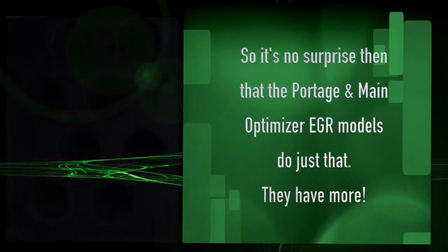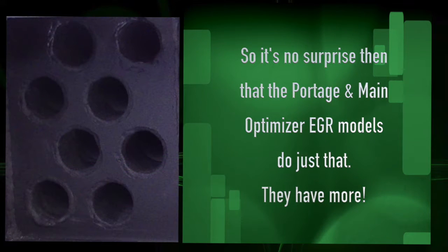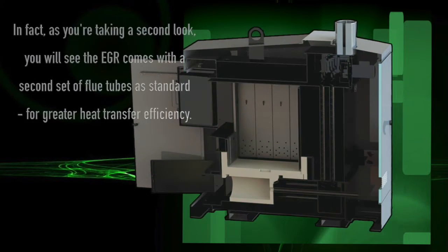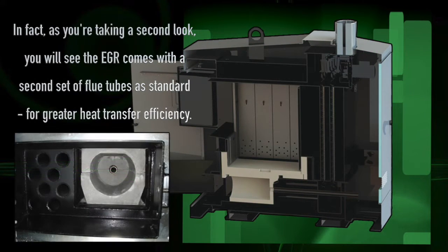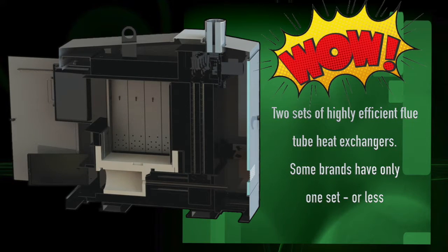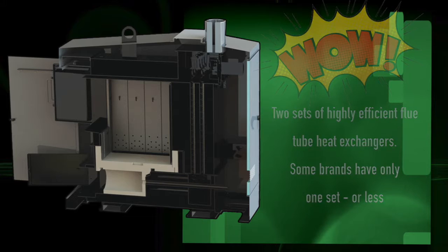No surprise then, the Portage & Main Optimizer EGR models do have more. In fact, as you're taking a second look, you will see that the EGR comes with a second set of flue tubes as standard, for great heat transfer efficiency. Two sets of high efficiency flue tube heat exchangers? Some brands only have one set or less.